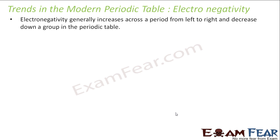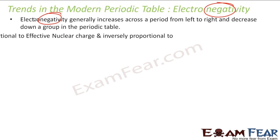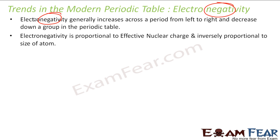So let's talk about the trends of electronegativity. Electronegativity generally increases across the period from left to right, and it is proportional to effective nuclear charge and inversely proportional to the size of the atom.